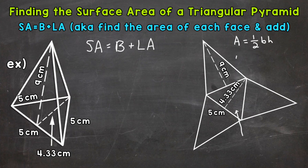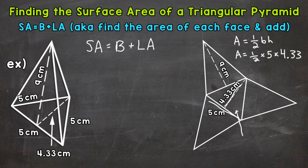Now we plug in. Area equals one-half. The base is five centimeters, times the height, which is 4.33. Now we're ready to calculate that area. That gives us an area of 10.83 centimeters squared — I rounded that decimal to the nearest hundredth. So the area of the base is 10.83 cm².